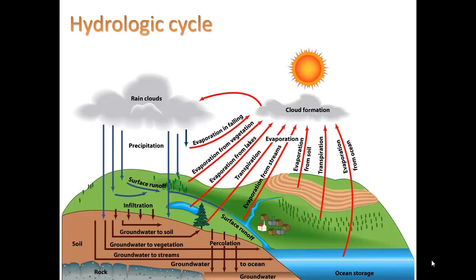Let's start with hydrology. Here's a review of the hydrologic cycle and you can see we have evaporation showing in red. We get evaporation even as rain is falling — some of it's evaporating — but what's most noteworthy is that we get evaporation from streams and also from vegetation if that vegetation is wet.